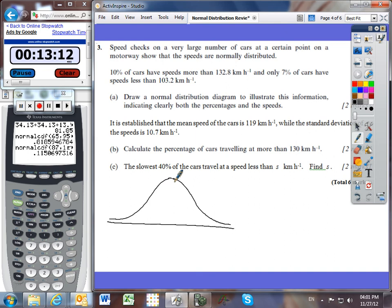We've got 10% that are more than 132.8. So this is the 132.8. And let's just label speeds of cars in kilometers per hour. So I've got 132.8, and I'll indicate that that percent, that's a 10% region. And then I've got 7% down here, a slightly smaller region. And they are less than 103.2 kilometers per hour. And I'll just indicate that that region is 7% in size. Moving on. It is established that the mean speed of the cars is 119 kilometers an hour, while the standard deviation of the speeds is 10.7 kilometers per hour.